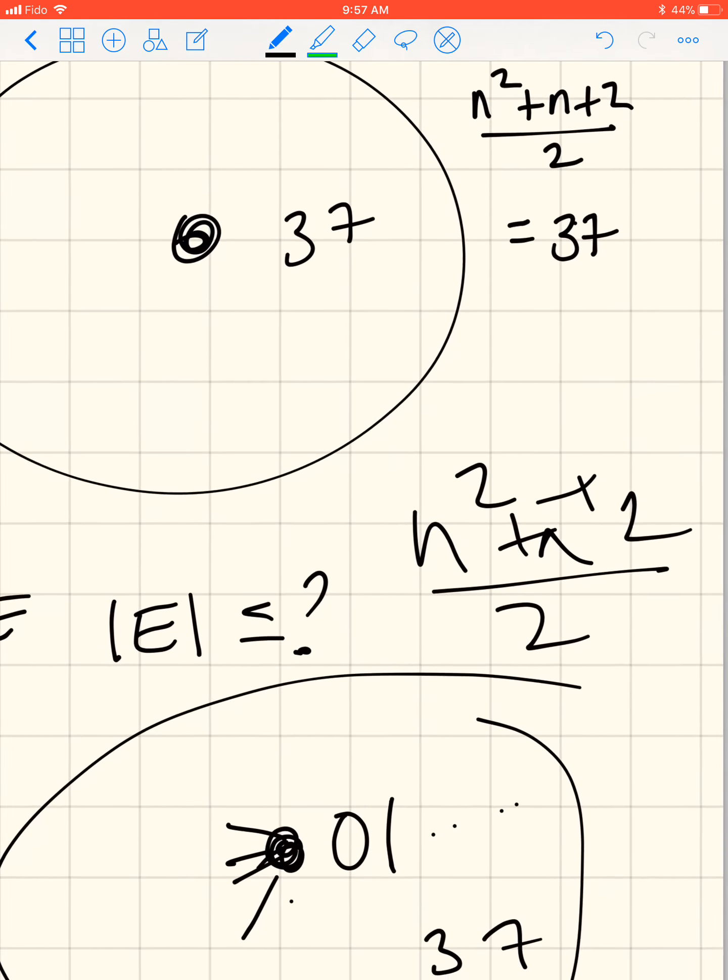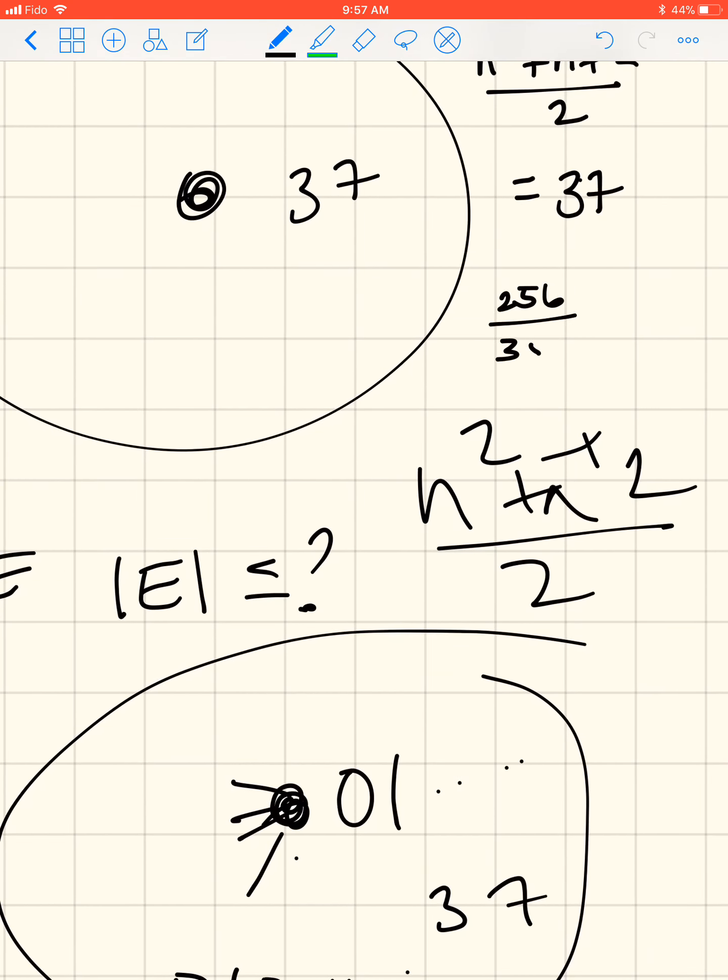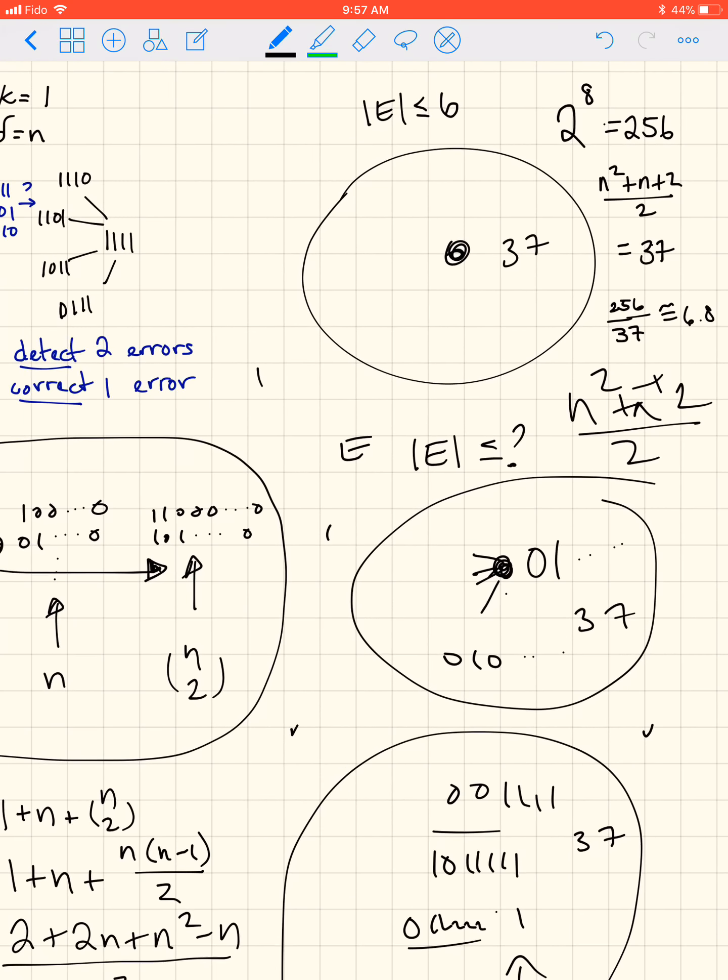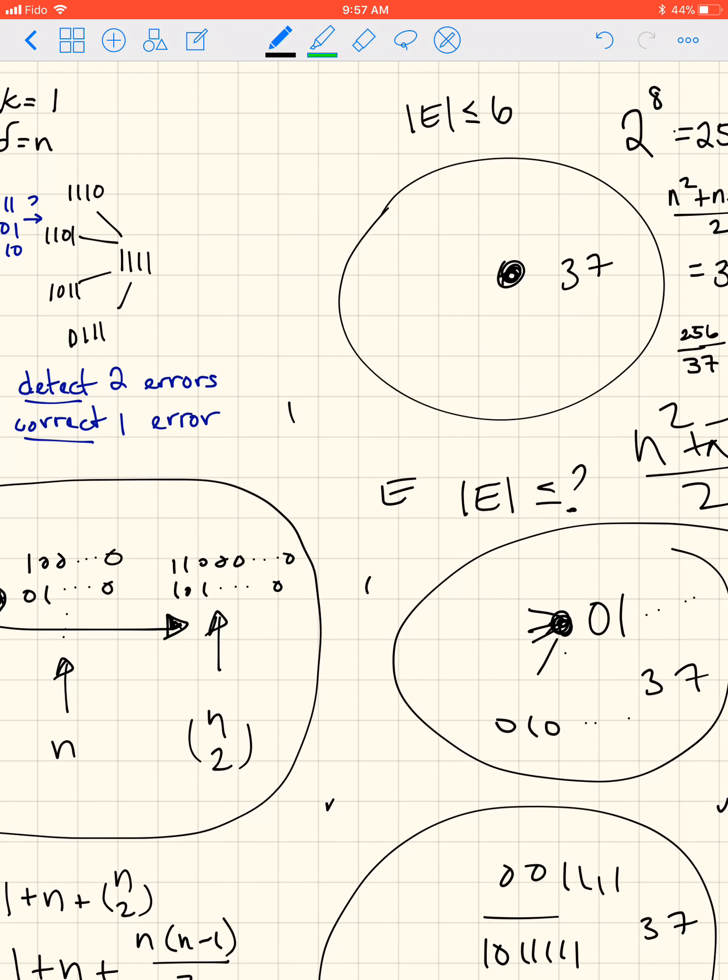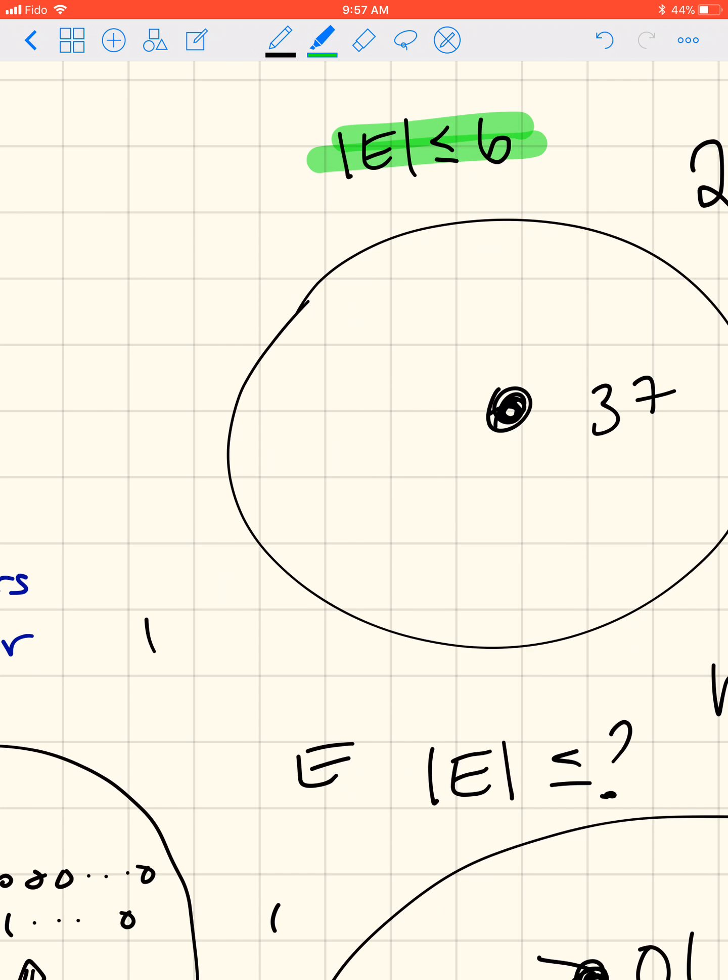Because whatever this number is, 256 divided by 37, it's about equal to 6.8 or something like that. So we have a maximum number of these spheres of 6 and a bit, so it's 6 because it has to be an integer, and each of these has at its center a code word, so that means we have at most 6 code words and the size of E, the number of code words, is less than or equal to 6.